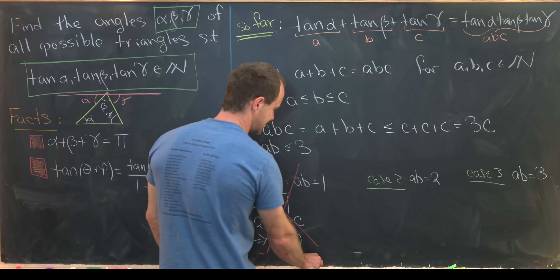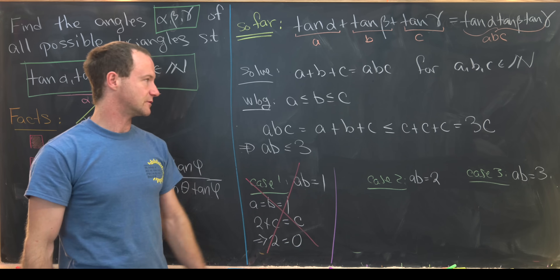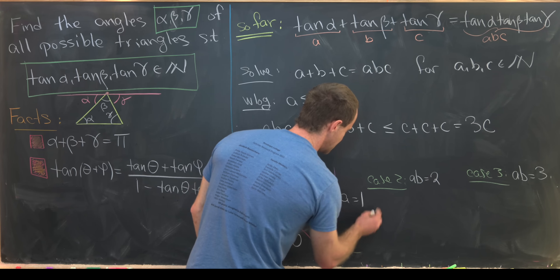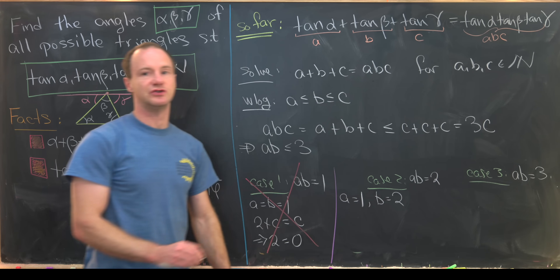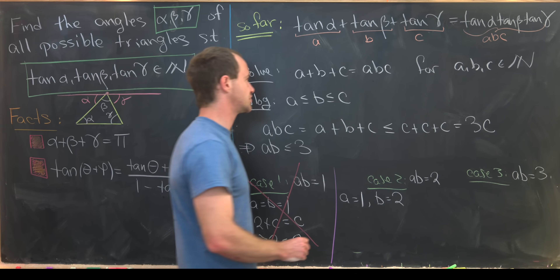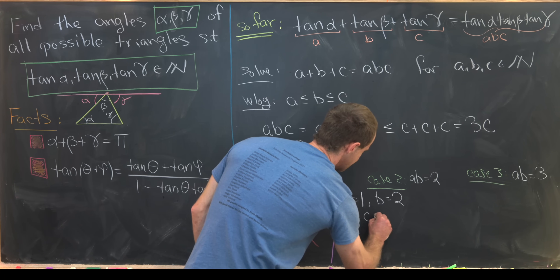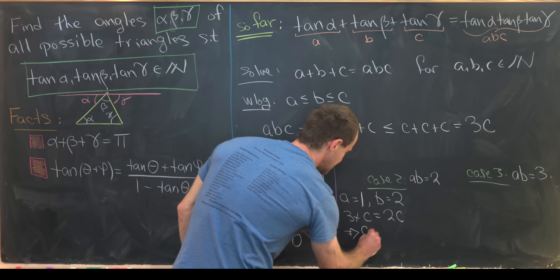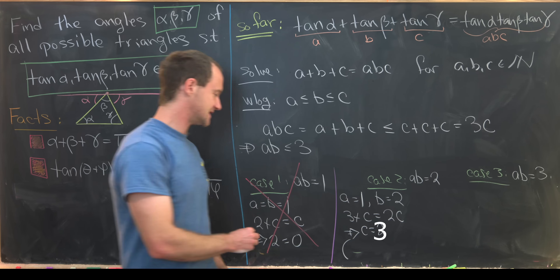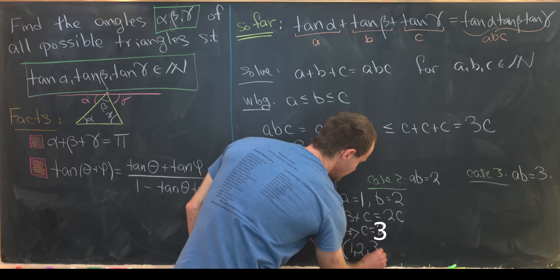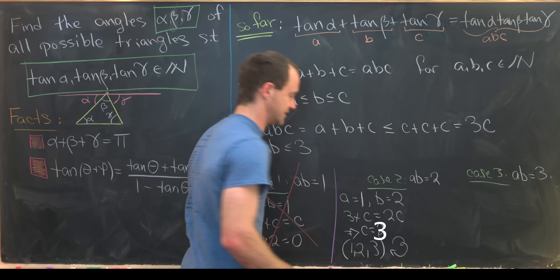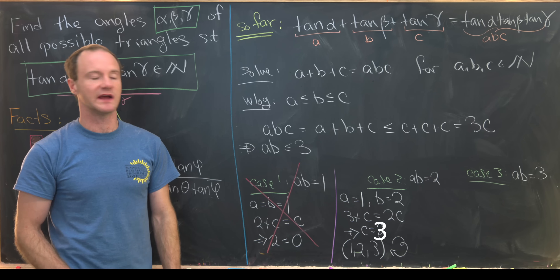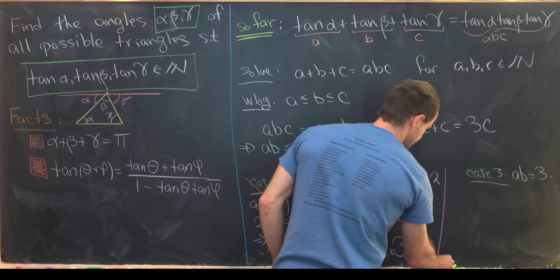Case 2: ab = 2. Since a ≤ b, we must have a = 1 and b = 2. Plugging into the original equation: 3 + c = 2c, so c = 3. This gives the solution (a, b, c) = (1, 2, 3) and all permutations.